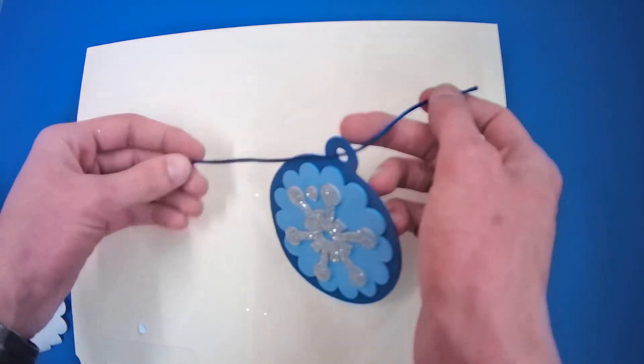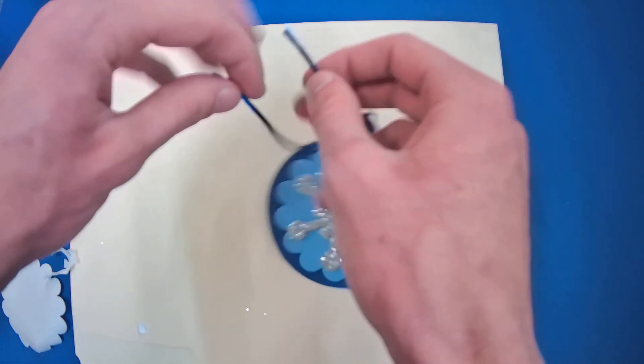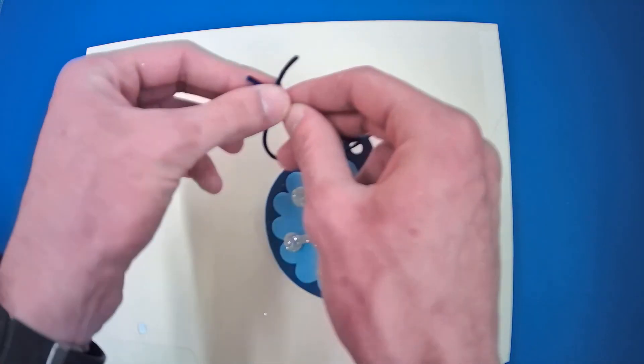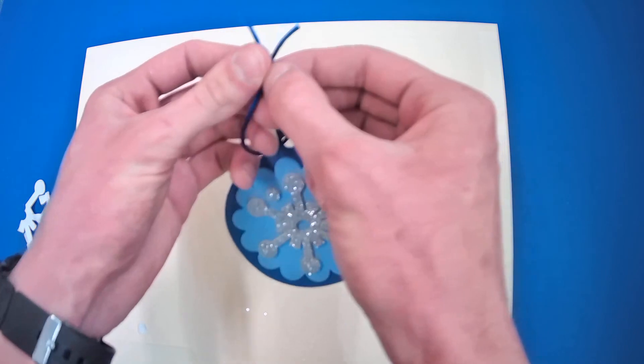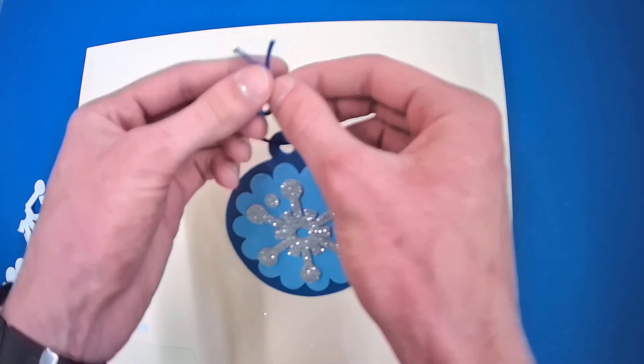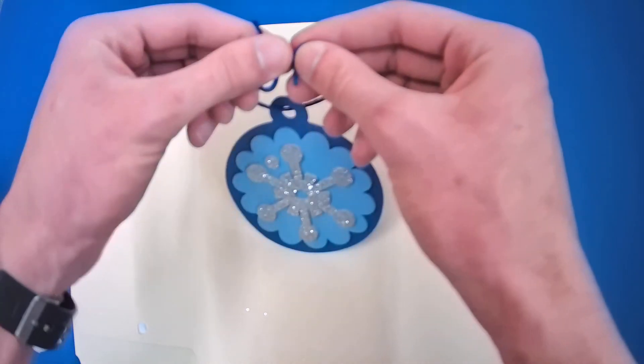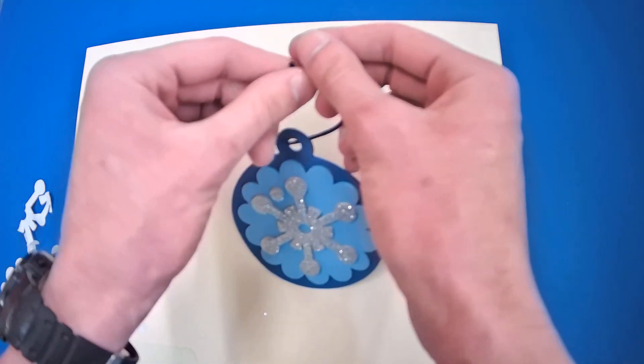We're going to take our string. We're going to thread it through the hole in the top. And we're just going to tie a knot just like this. You're going to make an X here. You're going to take this string, the one that's on top of our X.